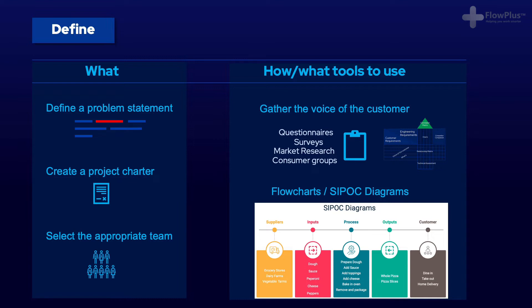In the example included, we're looking at a pizza restaurant. The suppliers are grocery stores and dairy farms. The inputs are the ingredients. And the customers are in their different forms, whether that be dine-in, takeaway or home delivery. SIPOC diagrams are a simple, good way to ensure that everyone is on the same page and you're aware of where the project boundary is.